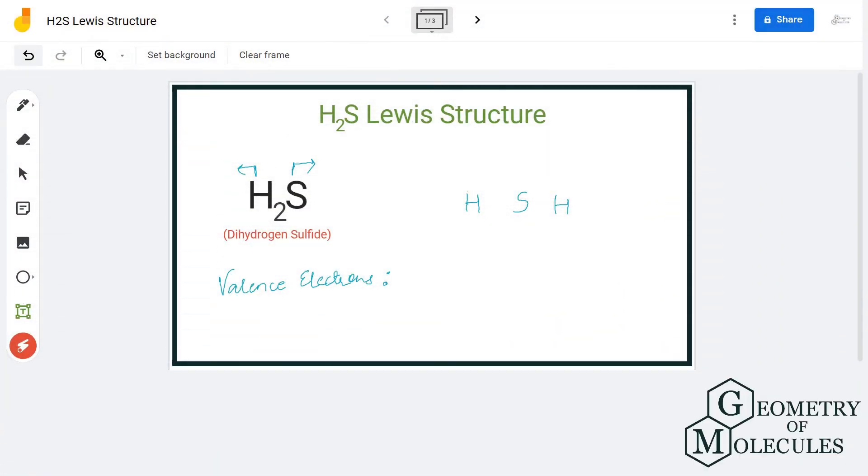Hi guys, today in this video we are going to look at the Lewis structure and total number of valence electrons for H2S, the chemical formula for dihydrogen sulfide. We'll first discuss the total number of valence electrons in this molecule, followed by its Lewis structure.